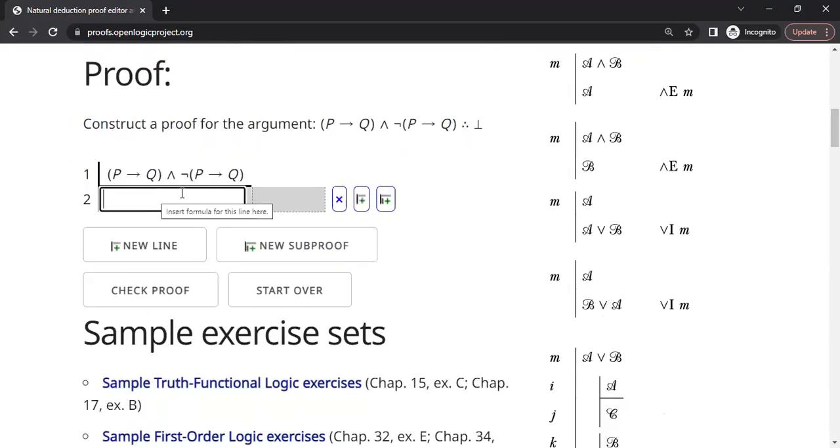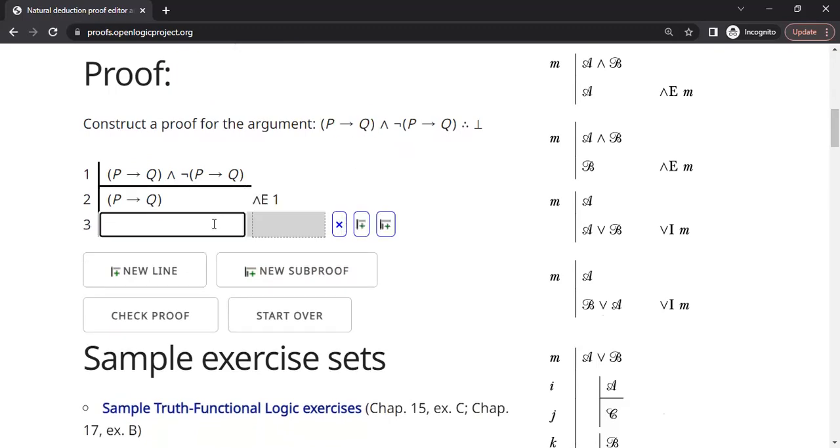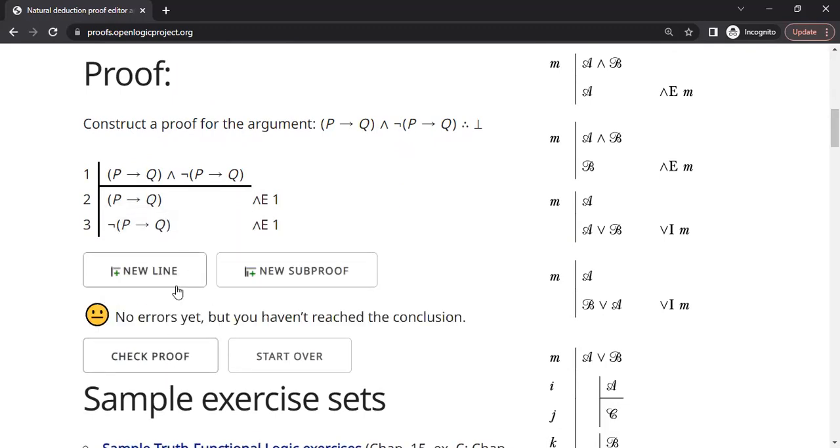From the first line, I will eliminate and I can do that because we talked about and elimination. Similarly, from the first line, I can also eliminate the second part of the understatement. So far, we are okay. No errors.